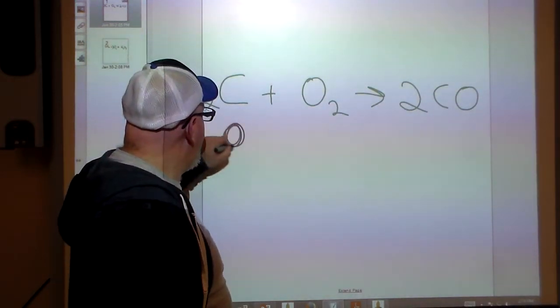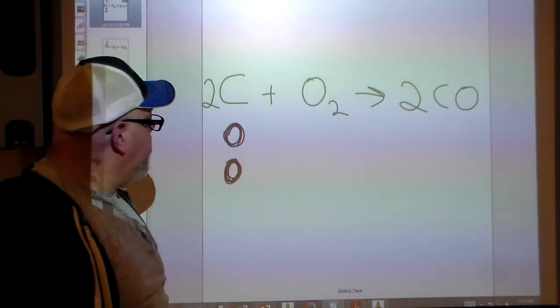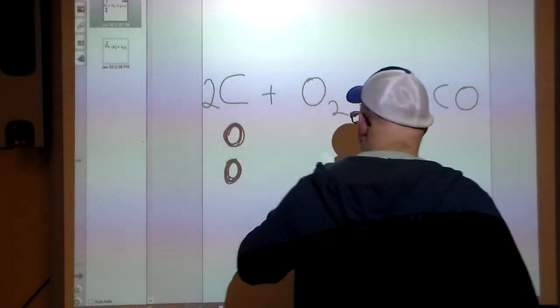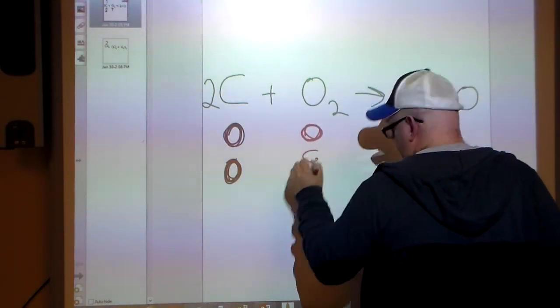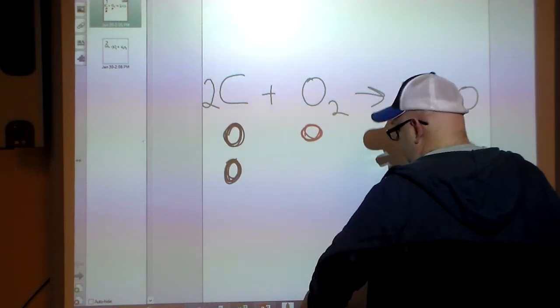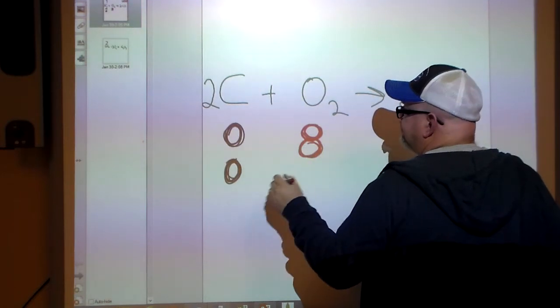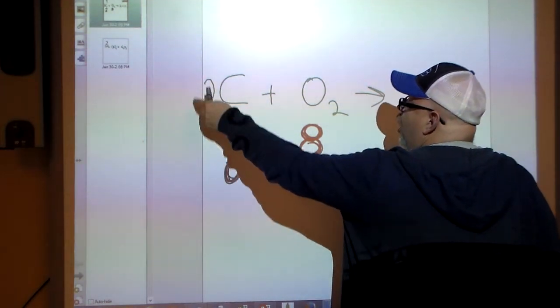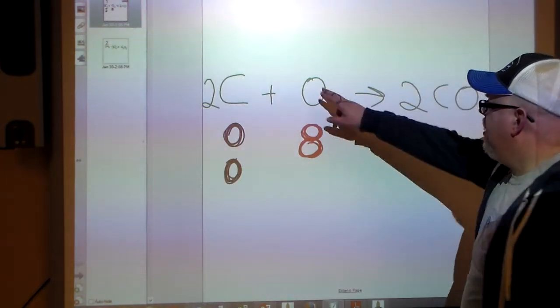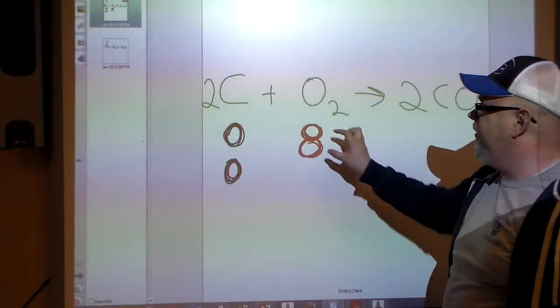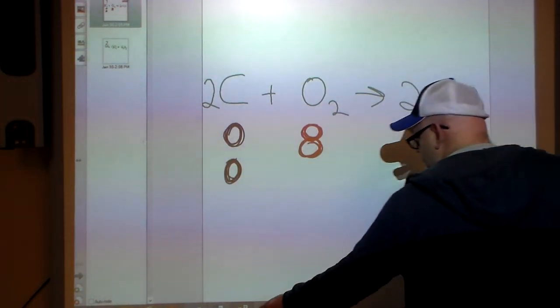Here we go. We're going to make these two black circles to represent our two carbons. And we are going to have our red circles here. Now, there's only one of them, you may notice. Because here we have the two, our coefficient two, that tells us there's two separate carbon atoms. Here we have one, just one O2, so we've got the two oxygen atoms put together.